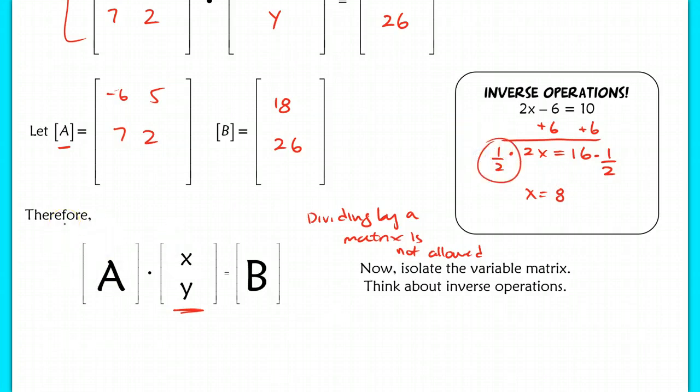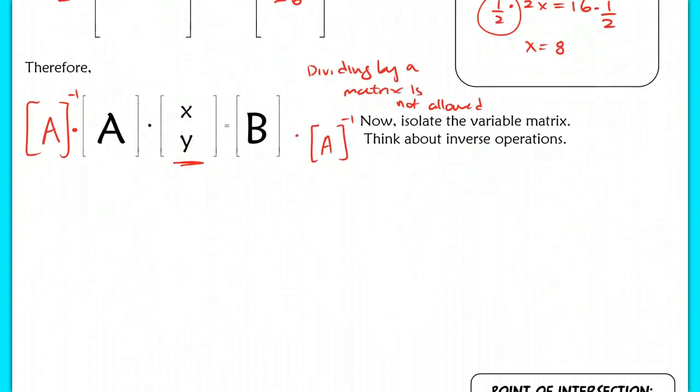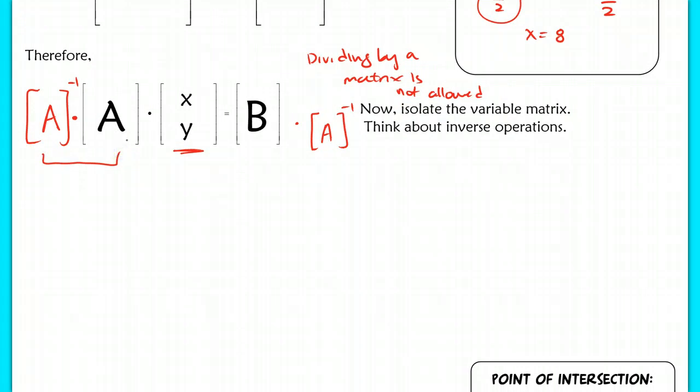Now, this is kind of what we're going to be doing here. Rather than dividing by a matrix, I'm going to multiply by its inverse. And I multiply it by its inverse on both sides. Now, when you multiply by its inverse, this side, because we know that if we multiply anything by its inverse, we end up with the identity matrix 1, 0, 0, 1. That's our identity matrix, multiplied by x, y. It's going to equal, on the right-hand side, we have b times a inverse.